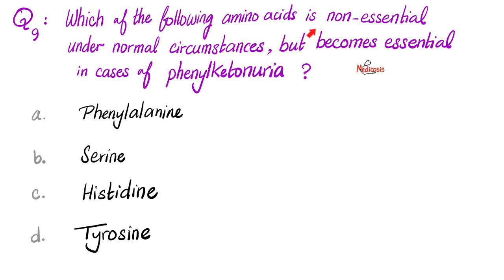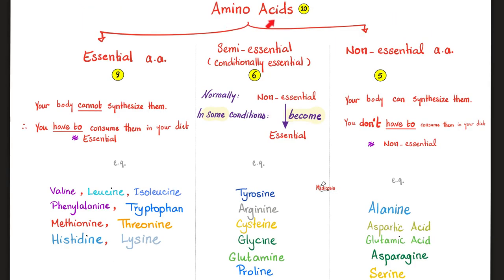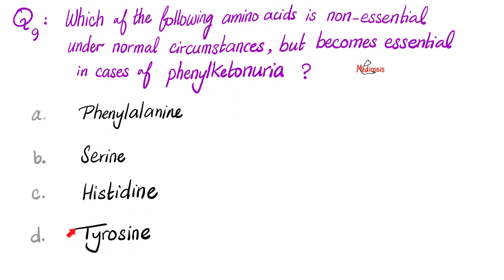Ninth question. Which of the following amino acids is non-essential under normal circumstances, but becometh essential in cases of phenylketonuria? Is it phenylalanine, serine, histidine, or tyrosine? Please pause. Look, even if you have no idea what phenylketonuria is, anytime you get asked about an amino acid that is non-essential under normal circumstances, but somehow becomes essential under other circumstances, they're asking you about a semi-essential amino acid or a conditionally essential amino acid. If you remember, we divide amino acids into essential, semi-essential, or conditionally essential, and non-essential. Look at the semi-essential. Normal circumstances? I am not essential. You do not have to eat me in your diet. However, in some conditions, in some diseases, like phenylketonuria, I become essential. And of the options that they gave you, only tyrosine belongs to the conditionally essential group. So the correct answer here is tyrosine, or choice D.